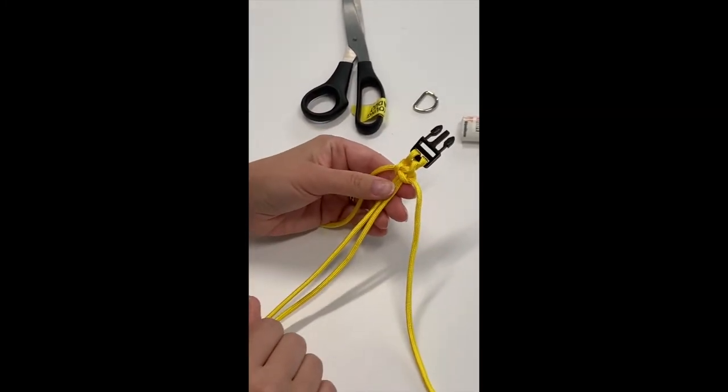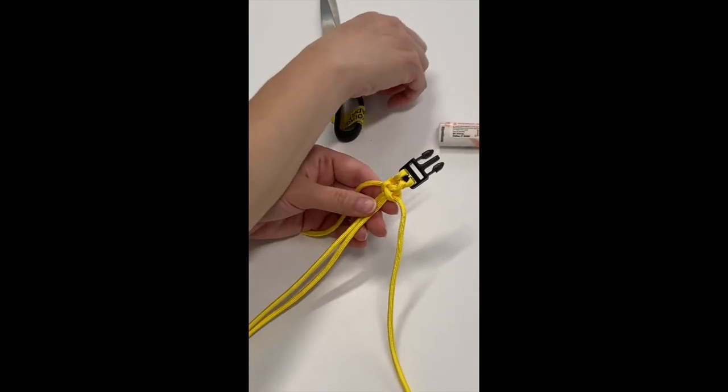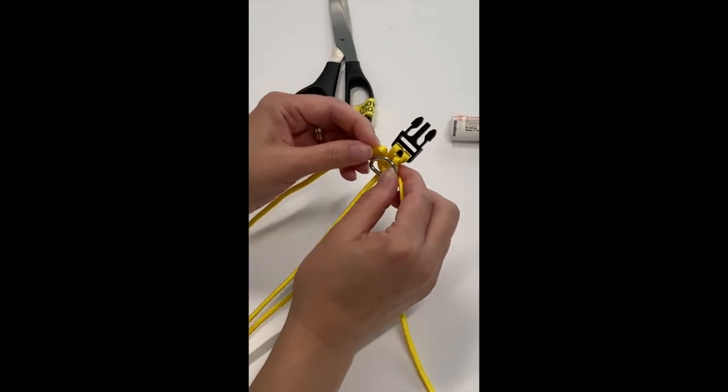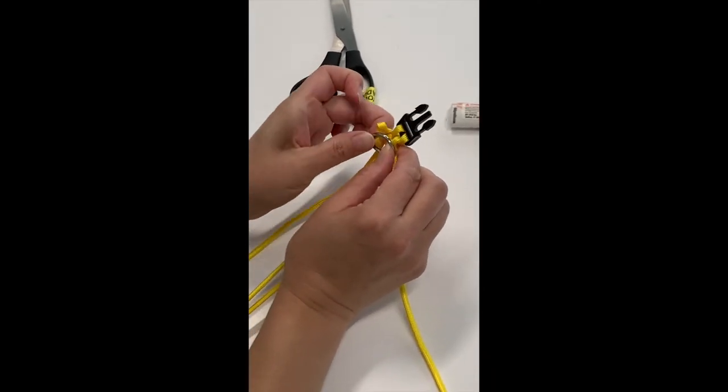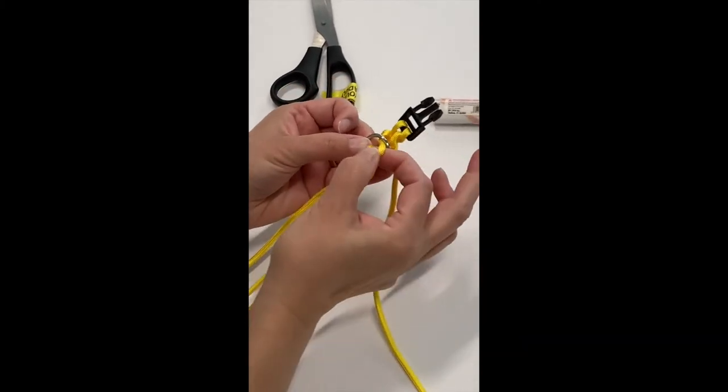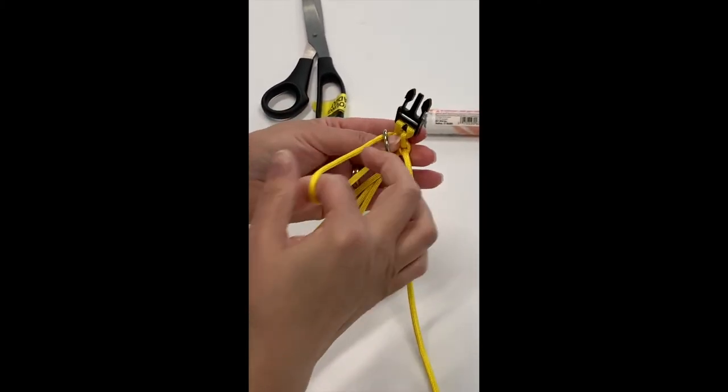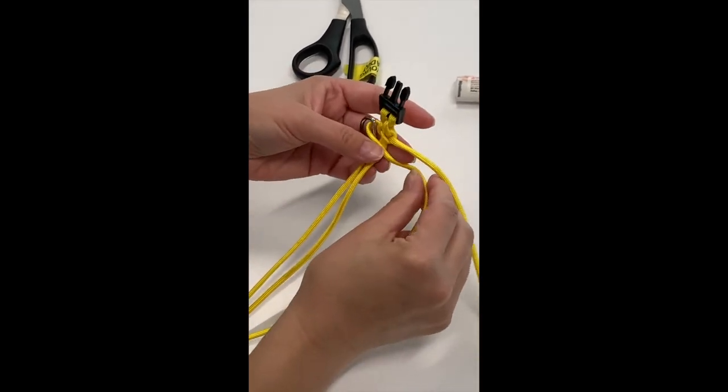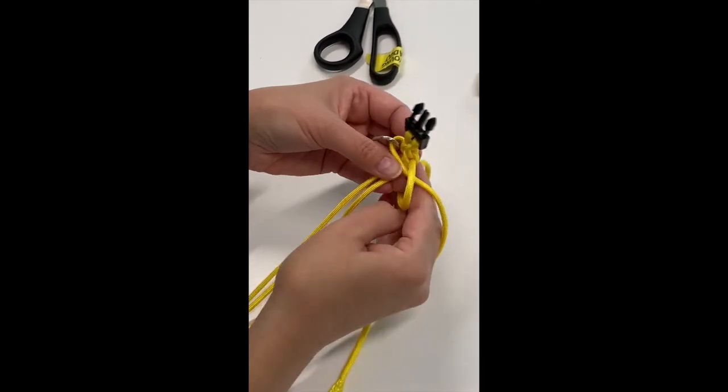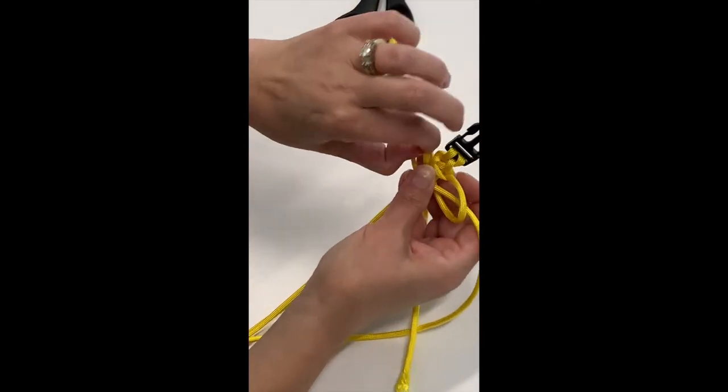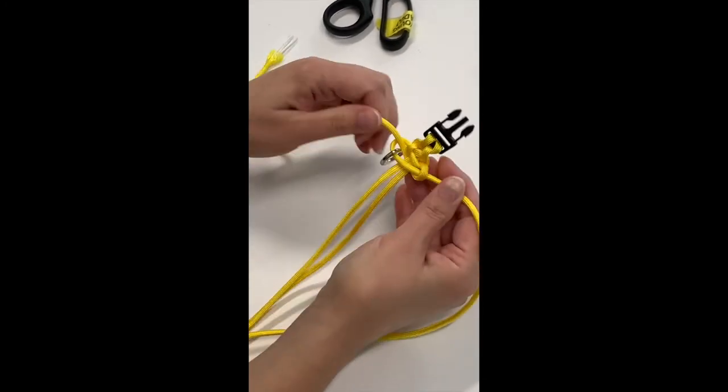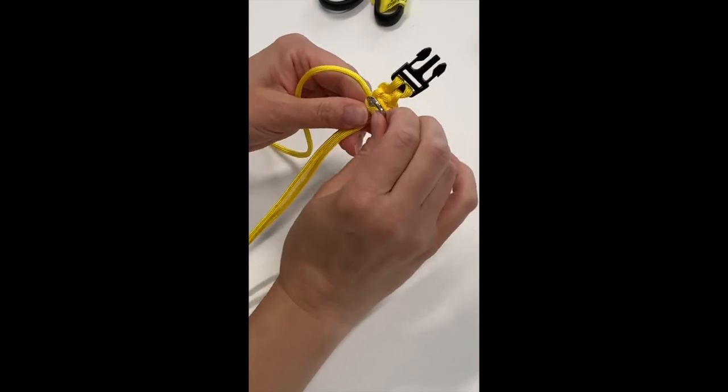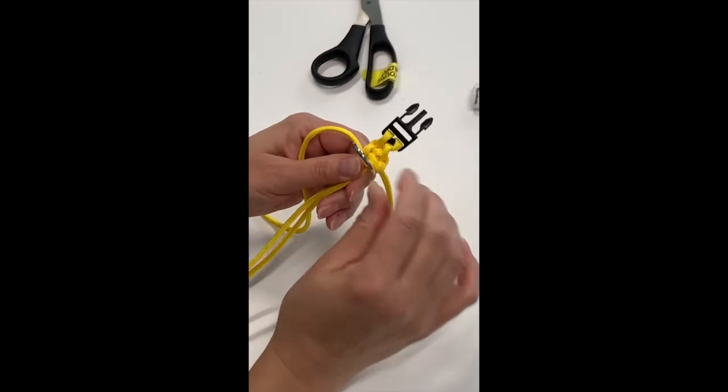To insert the D-ring, you're going to take the D-ring and put it through. And you're going to begin the loop again. Make your loop, bring the paracord around. And that will tie your first loop of the paracord and your D-ring onto your bracelet or your collar.